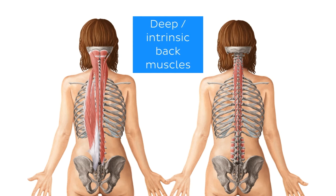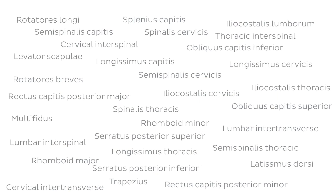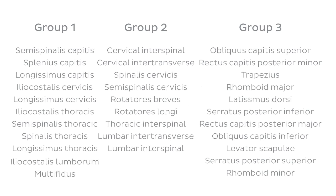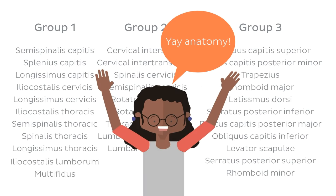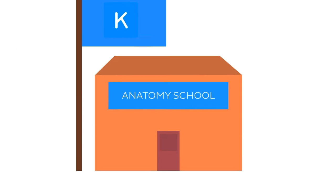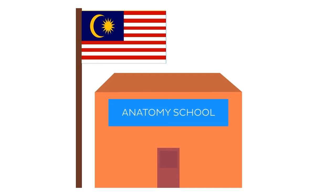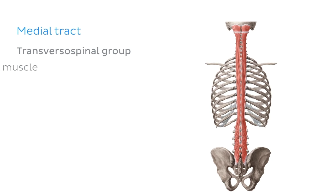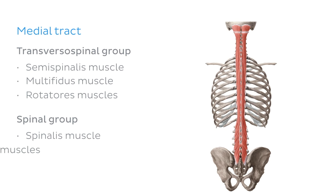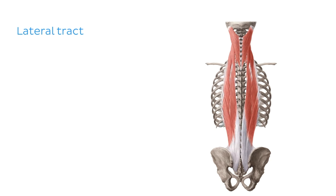Like many things in anatomy, the deep muscles of the back can sometimes be split into a series of groups to help us learn and memorise them. However, being the big, diverse and wonderful world of humans that we are, different schools of anatomy approach this division differently. One way of approaching the division is into two longitudinal tracts: a medial tract, which involves the muscles closest to the vertebrae, and a lateral tract, which involves the muscles that are a little more lateral.